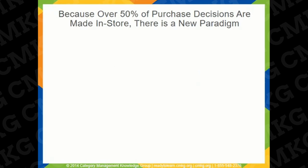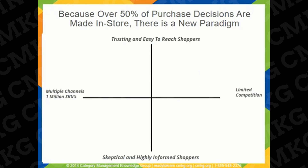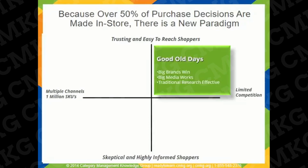Over 50% of purchase decisions are made in store. In the good old days, shoppers were trusting and easy to reach, and there was also limited competition. In this environment, big brands won, big media worked, and traditional research was very effective.